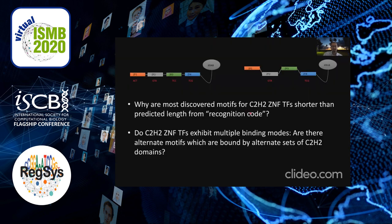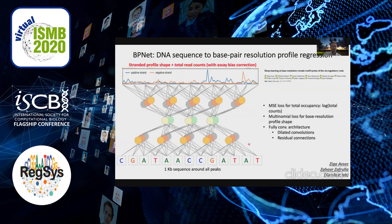To summarize the questions we have in mind: why are the C2H2 zinc finger motifs so short? And are there multiple binding modes where there are alternate motifs bound by alternate sets of zinc finger domains? To try and understand these questions better, we trained neural network models.